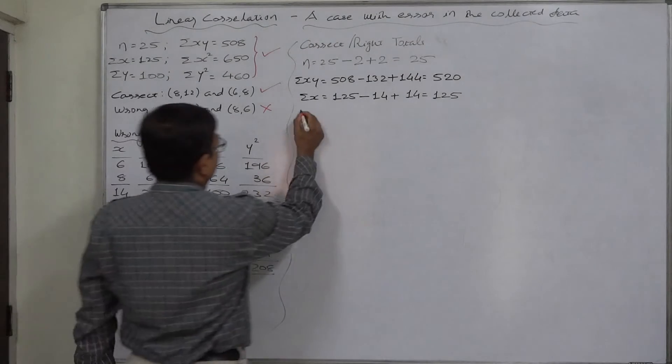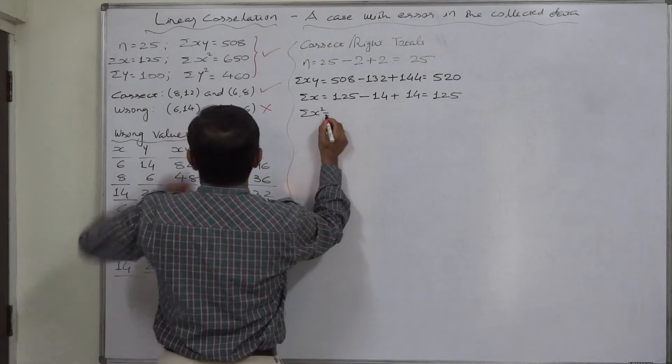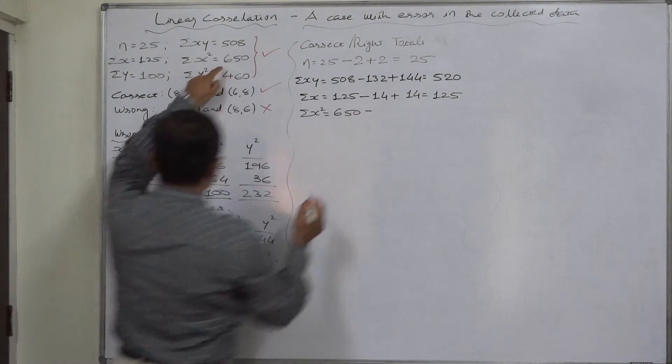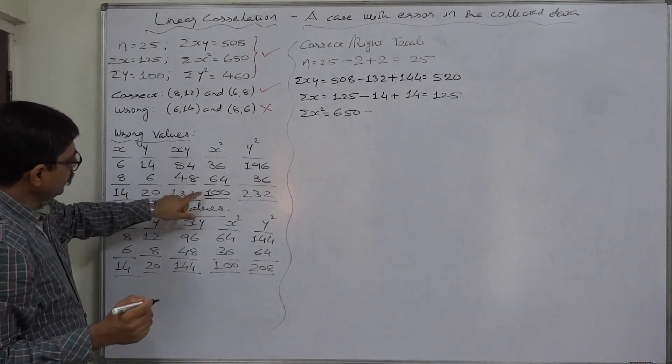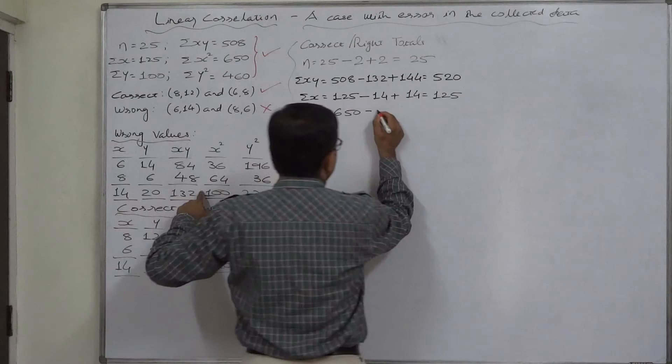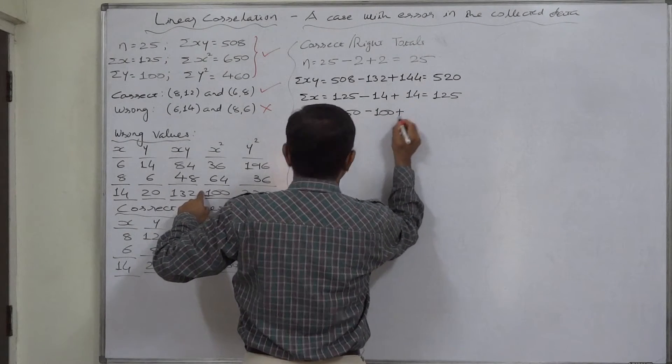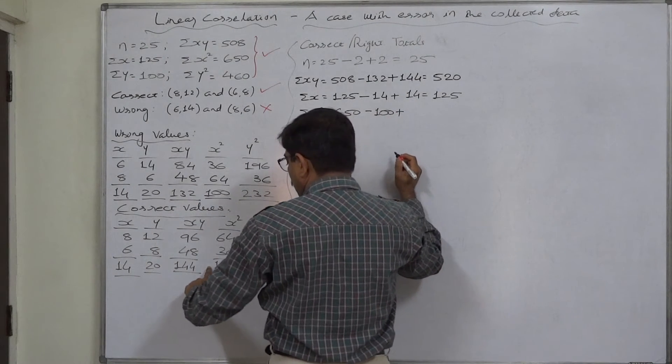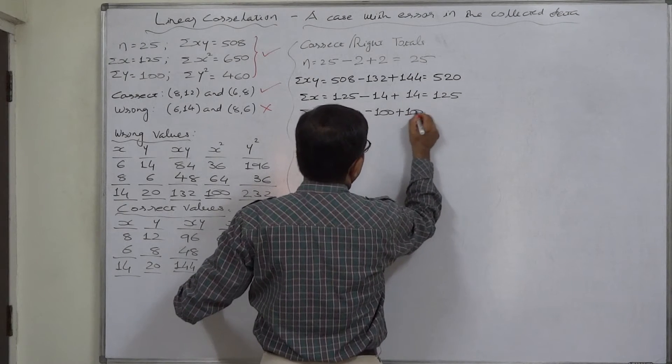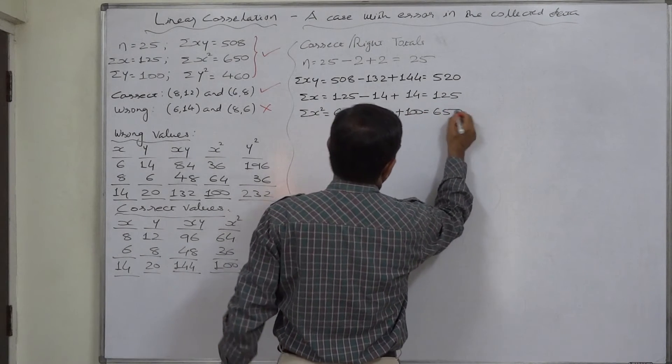Now, Σx², it is given to be 650 before any rectification. We have to remove the effect of wrong values of x², 100. And we have to add the effect of correct values of x² is also 100. So it remains 650.